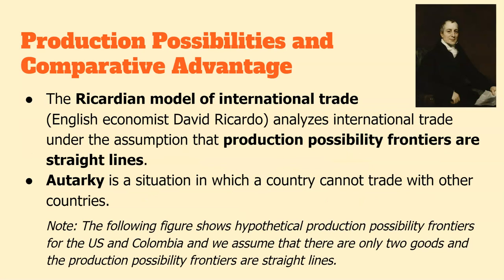Looking at this from the macroeconomic lens, this comes from David Ricardo, an English economist who developed the Ricardian model of international trade — essentially looking at constant opportunity cost between two goods being produced. That was key graph two in our graphing notebook: the idea of a straight line of production possibilities between the two goods being produced.